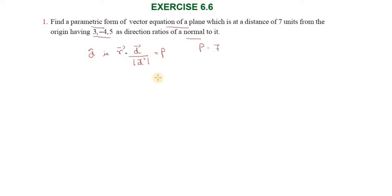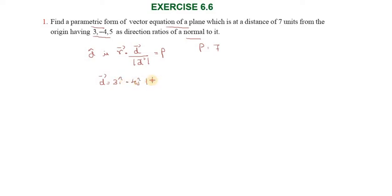The direction vector d vector equals 3i-cap minus 4j-cap plus 5k-cap.